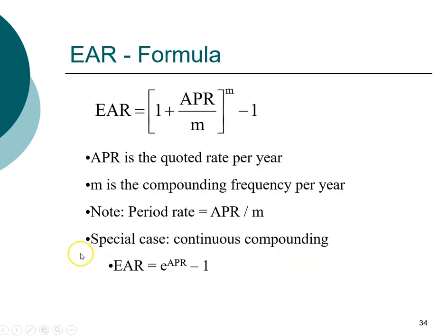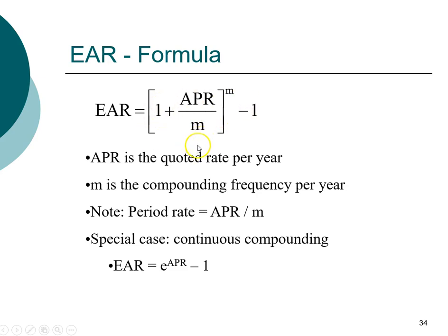We can generalize this concept into a formula. Remember that a formula is just a shortcut. To compute the EAR — effective annual rate — all you need is the annual percentage rate and M, the compounding frequency per year. If this is monthly compounding, M will be 12; if quarterly, M will be 4. This is a good time to pause the video and write this formula on your formula sheet.